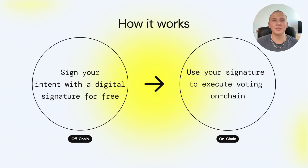Imagine yourself as a DAO member. Any DAO member can initialize the voting, vote, and then execute the transaction. The on-chain mechanism asks you to pay gas fees every time you go through these steps. With the off-chain approach, you only need to sign your intent with a digital signature. When it comes to execution, you use your signature to be added into the blockchain.